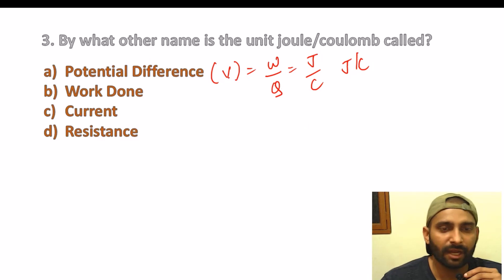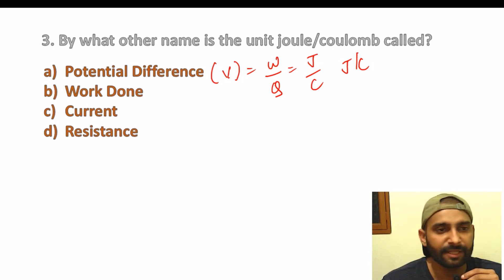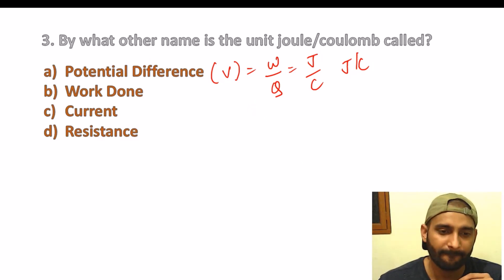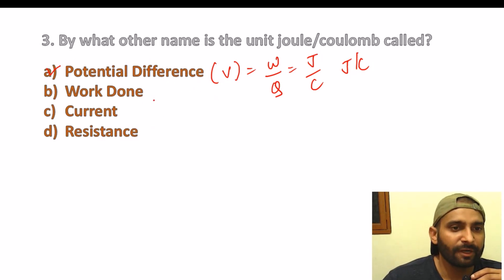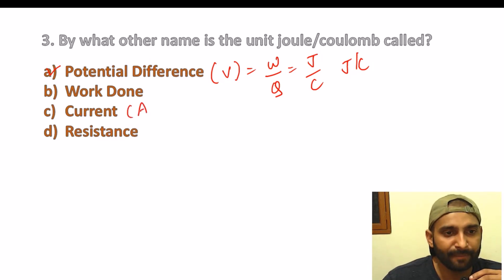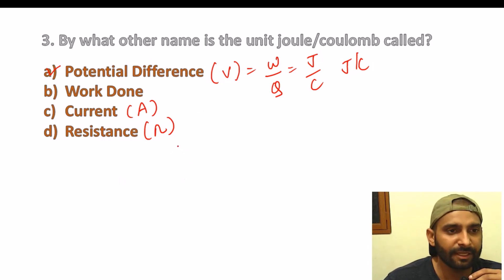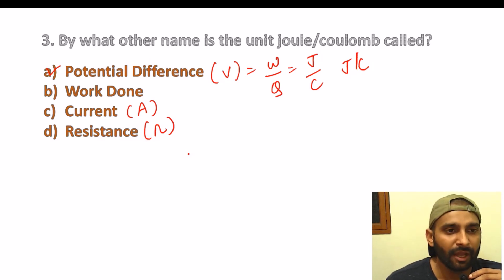So students, if you want to practice, definitely mention your answers in the comment section so we can know whether your answer is correct. The correct option here is potential difference — vidyut vibhantar. Work done is not the answer; the unit of current is ampere, and resistance unit is ohm. You can pause the video and check your answers in the comment section.